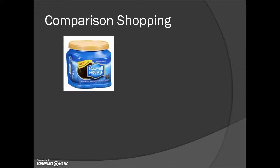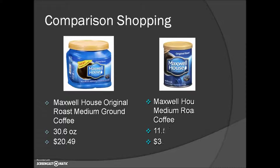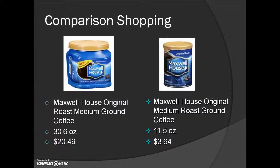Here's an example of shopping for coffee. We have Maxwell House original roast medium ground coffee — a 30.6 ounce container costs $20.49. The same product is also packaged in an 11.5 ounce container costing $3.64.